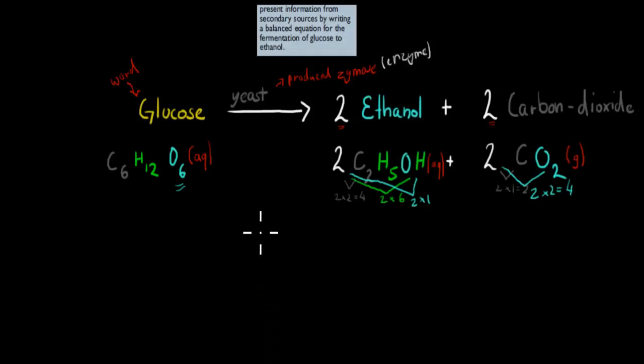So that's why we balance equations, and it's really important to know this equation, because there's actually a dot point which says, by writing the balanced equation for the fermentation of glucose to ethanol. So you need to remember this equation. I mean, generally it's good to remember equations, but if it says you need to remember this equation, then you definitely need to remember this equation. But not just that glucose goes into ethanol and carbon dioxide, but also how we have one glucose going to two ethanols and two carbon dioxide. So those two parts in front are really important.